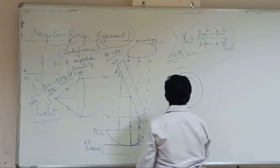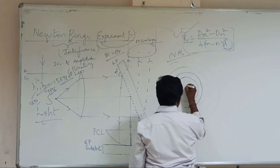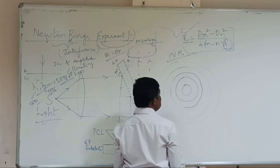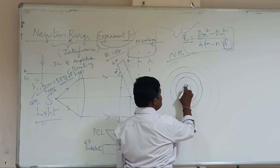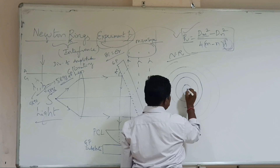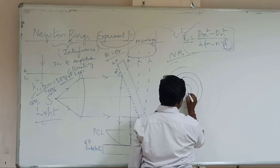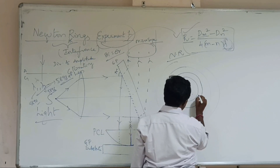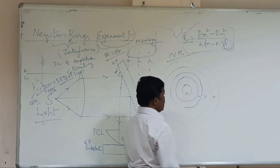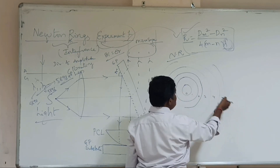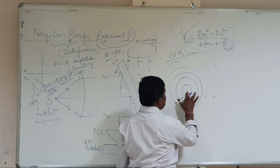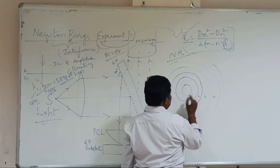There may be rings like this. You can take the center ring as 0, and the next rings as 1, 2, 3, 4, and so on. You can even take the next one — it's up to us.